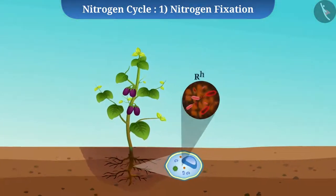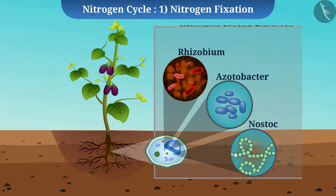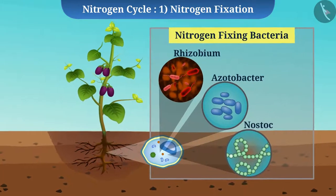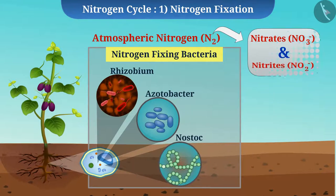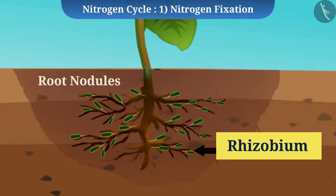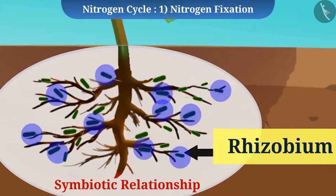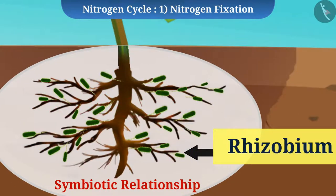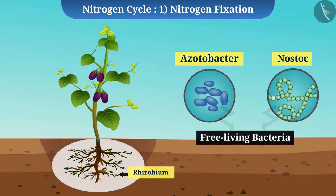Certain bacteria such as Rhizobium, Azotobacter, and Nostoc are called nitrogen-fixing bacteria because they can convert atmospheric nitrogen to nitrates and nitrites. Bacteria such as Rhizobium live in root nodules of leguminous plants and maintain a symbiotic relationship with the plants — meaning both organisms benefit from each other. Bacteria such as Azotobacter and Nostoc are free-living bacteria.